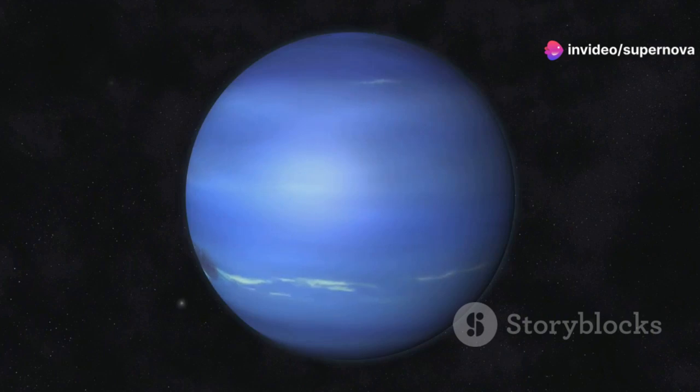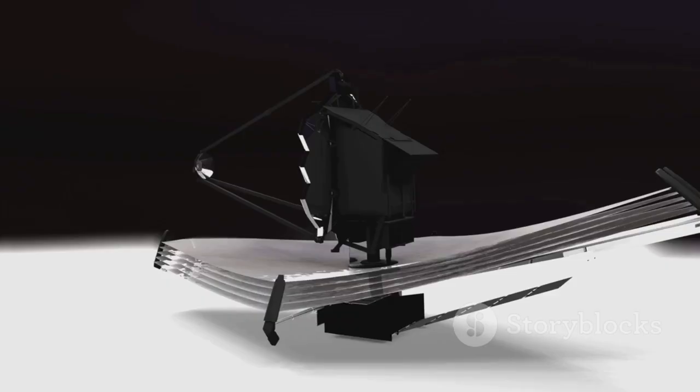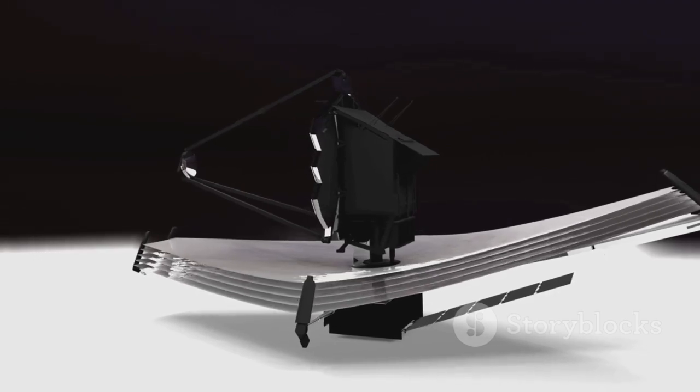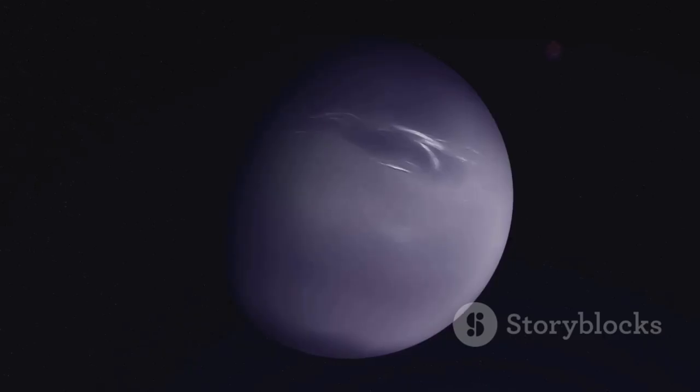We can even see some of Neptune's smaller moons, difficult to observe from Earth. But JWST is not just about pretty pictures. Its observations provide valuable information about Neptune's atmosphere, including its temperature, composition, and cloud structure.